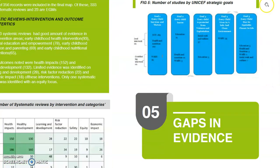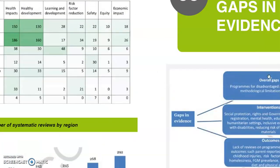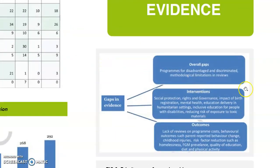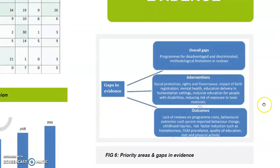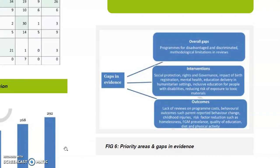Section 5 points out the gaps in evidence. One major gap is for mental health interventions and mental health outcomes. A gap was also identified on the management of severe acute malnutrition, which is a huge issue in many low- and middle-income countries. There is less information on behavioral outcomes and limited evidence on school vouchers or reduced fees. There is no systematic review of delivering education in humanitarian settings or of inclusive education for people with disabilities. There are also no reviews on safe places to play and traffic calming, and limited evidence on child abuse and neglect as well as impact of birth registration. On the whole, there is a paucity of evidence in programs for disadvantaged and discriminated populations.